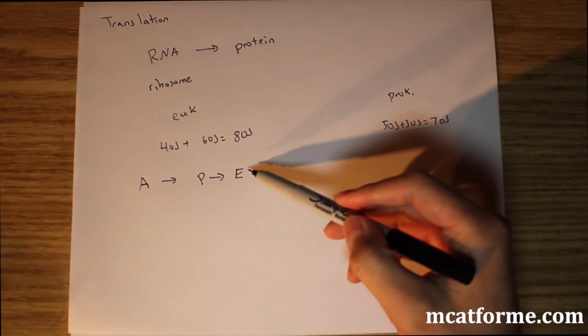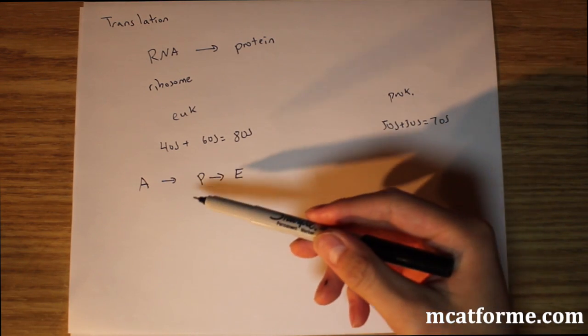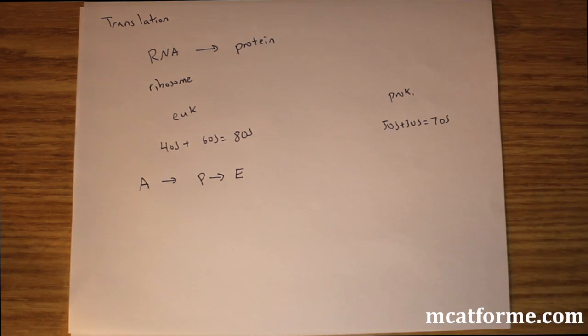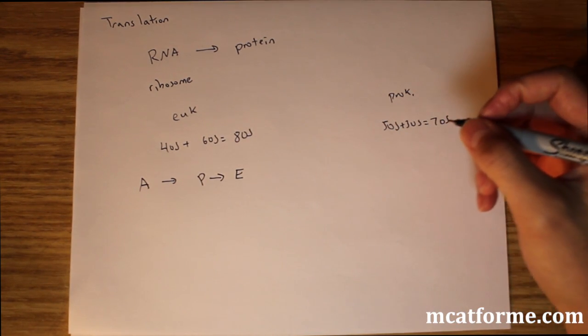The E is the exit site. The P is the peptidyl site. It's where we have the growth. And the A is the aminoacyl site. And it's where all the tRNAs will add all the amino acids there.